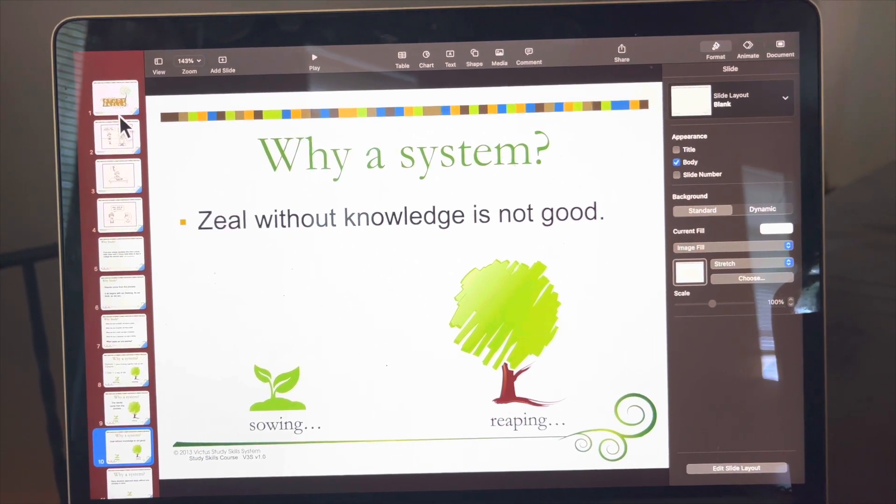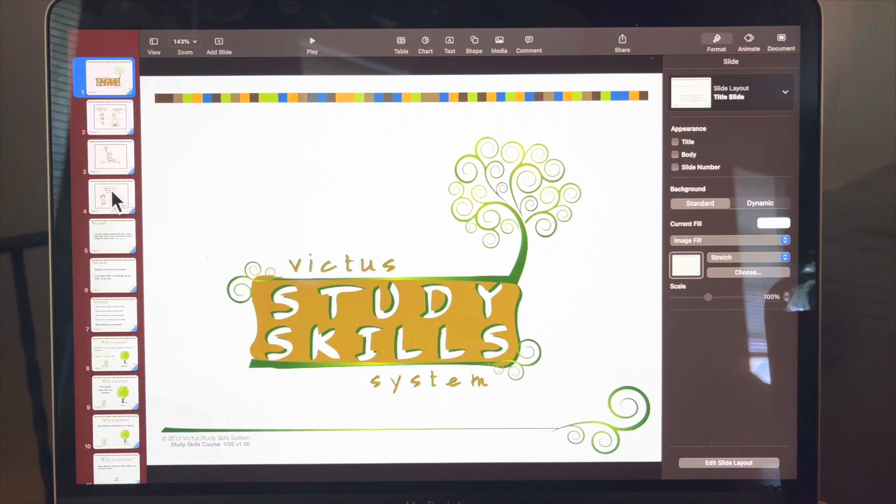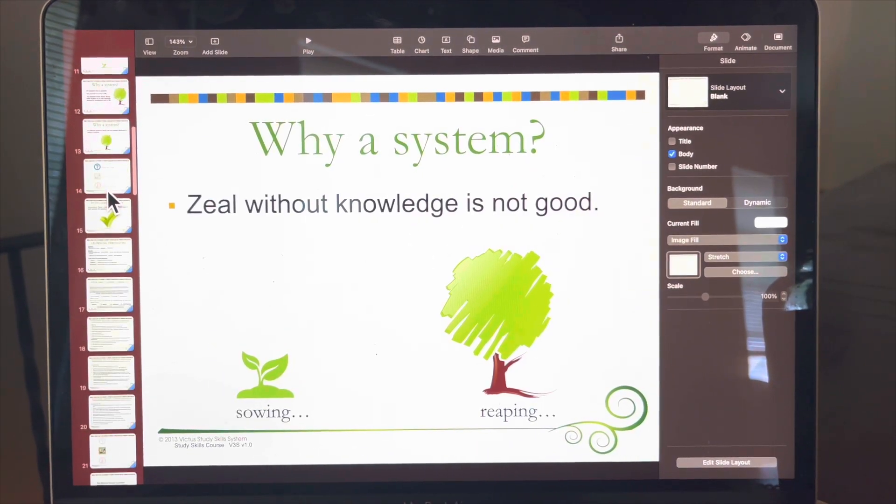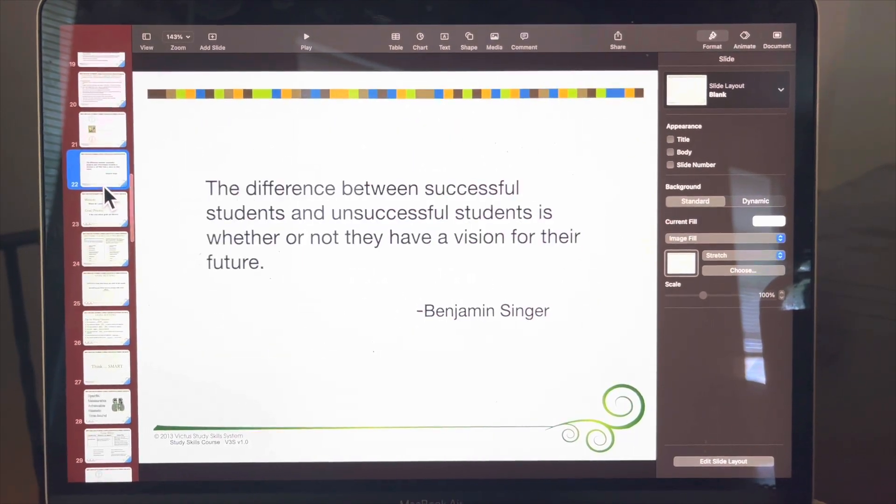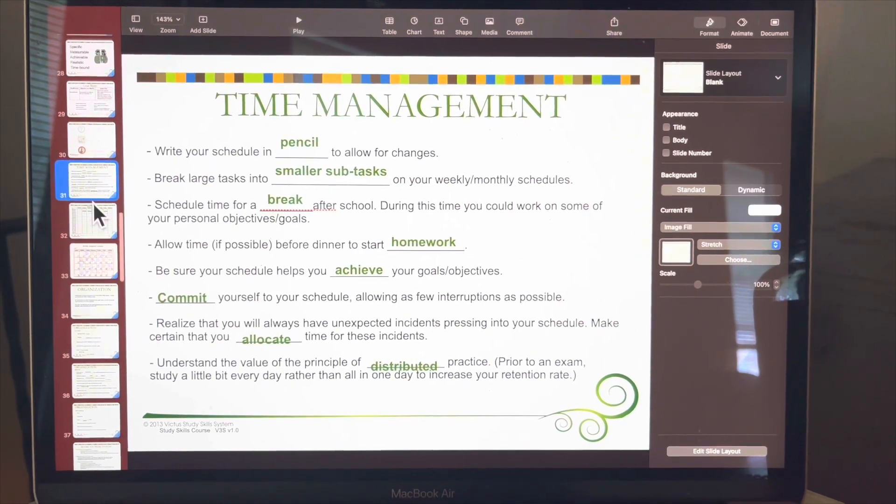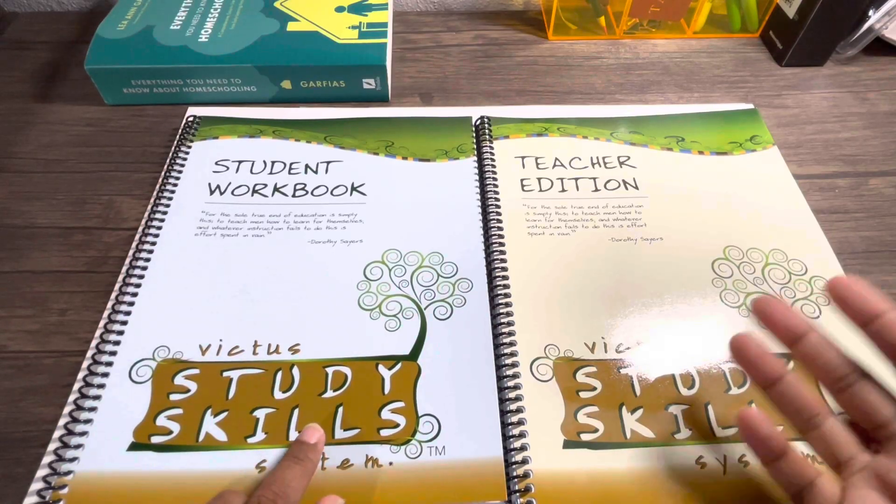I ordered it through Rainbow Resources and basically they will send you an email with all the things. There's also a quiz that they send to you. In order to get the slides, you have to go through IEW on their website. They will let you make an account and download the slides that you need if you want to have a visual element for your kids.